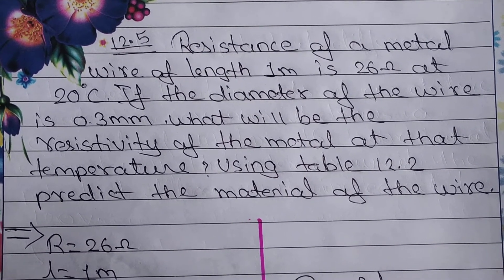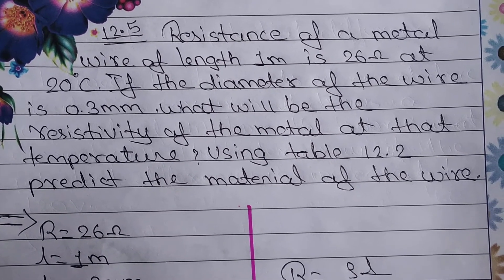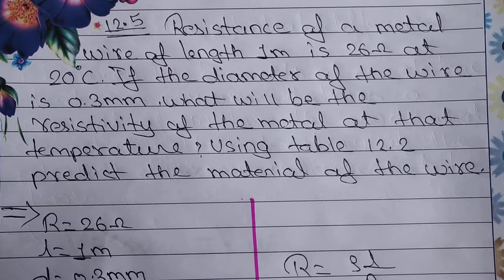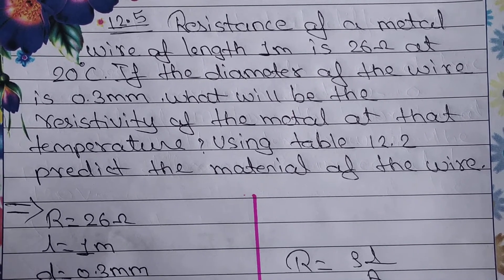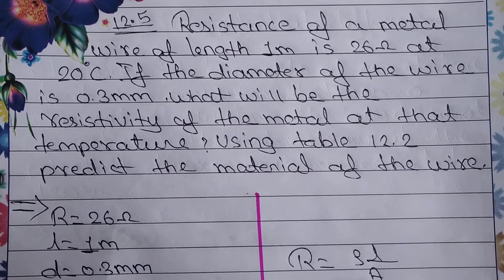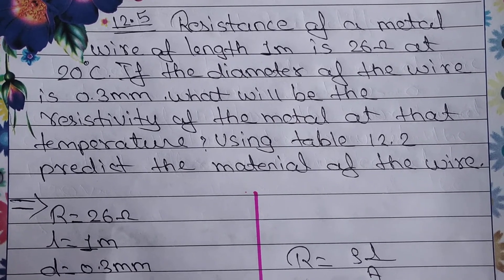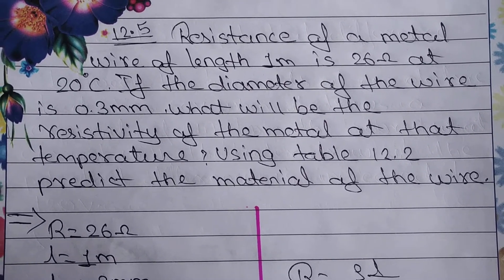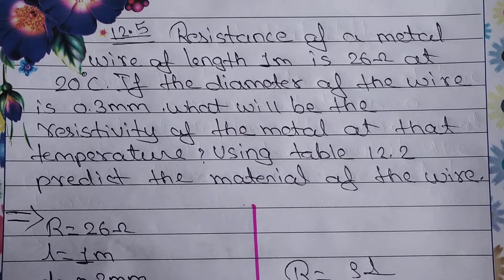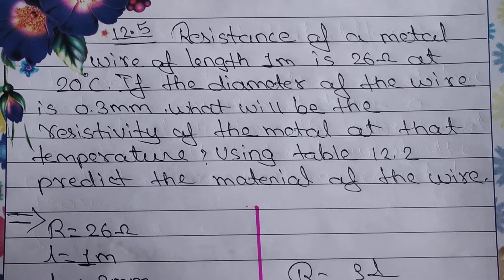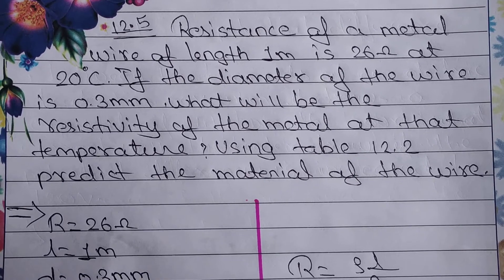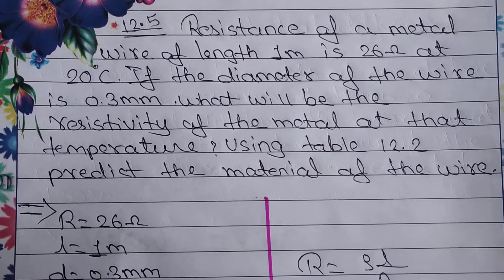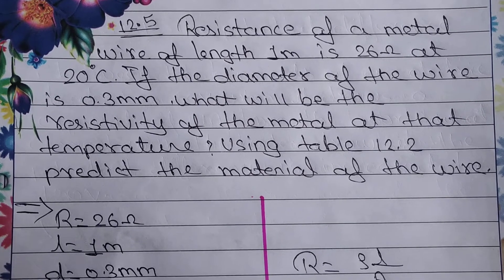Now the next question, 12.5. The question: resistance of a metal wire of length 1 meter is 26 ohm at 20 degree Celsius. If the diameter of the wire is 0.3 mm, what will be the resistivity of the metal at that temperature? We also need to use table 12.2 to predict the material of the wire. Given: length L equals 1 meter, R equals 26 ohm, temperature is 20 degree Celsius. We have to find the value of rho, that is resistivity.